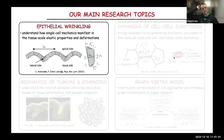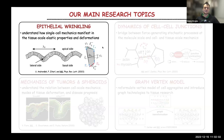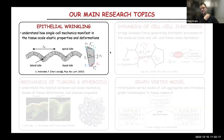Before I delve into the actual topic of the talk, let me first briefly introduce some other research topics that my group is working on at the moment. One is certainly epithelial elasticity in general, or epithelial wrinkling in particular, where we are trying to understand how single-cell mechanics manifest in tissue-scale elastic properties and deformations. We describe epithelial monolayers, or biological tissues, at a single-cell level using a vertex model.